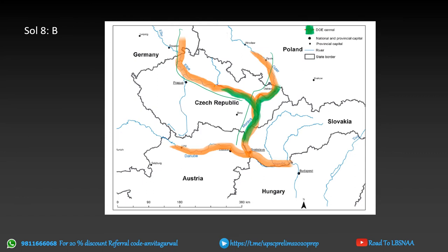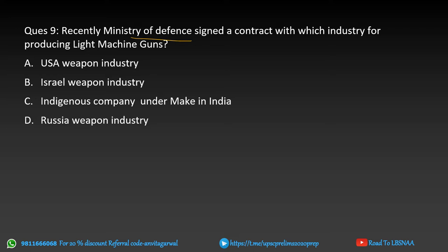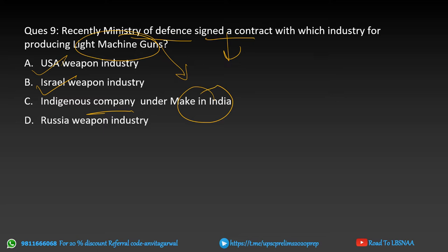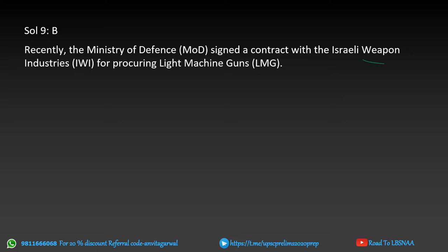Next question: the Ministry of Defense recently signed a contract with which industry for producing light machine guns? Options are USA, Israeli Weapon Industry, a Make-in-India indigenous company, or Russia's weapon industry. The correct choice is Israeli Weapon Industry. The Ministry of Defense recently signed a contract with Israeli Weapon Industry for procuring light machine guns.